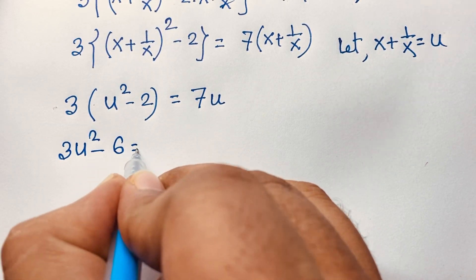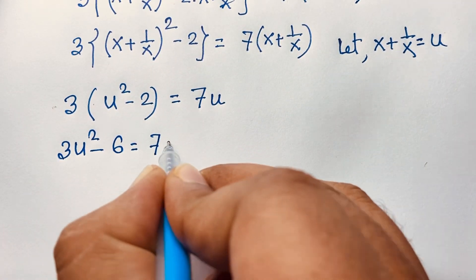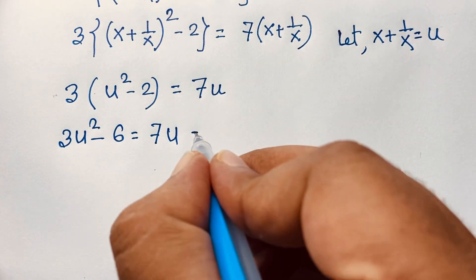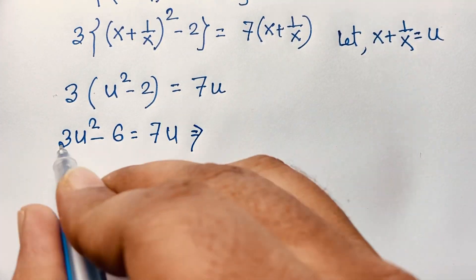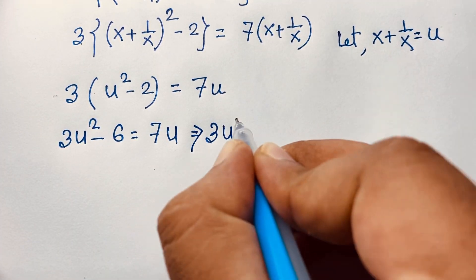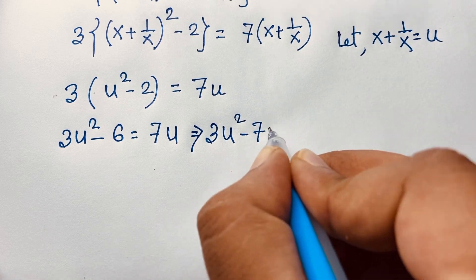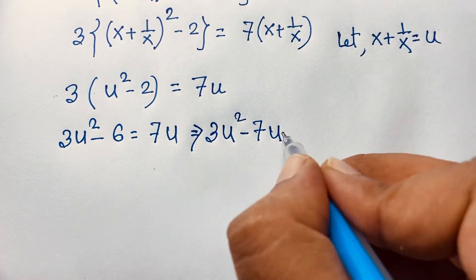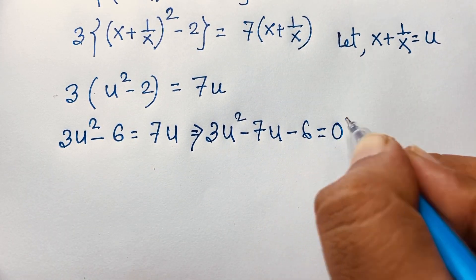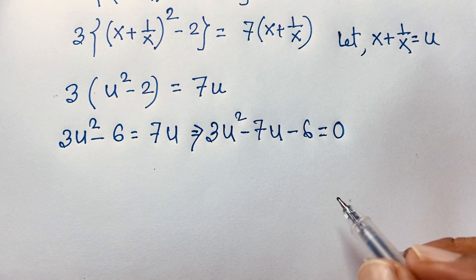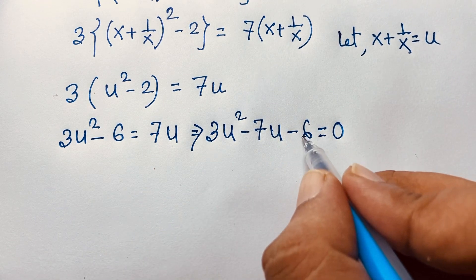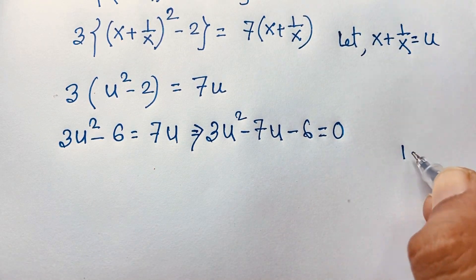Expanding: 3u squared minus 6 equals 7u. Rearranging, we get the quadratic equation 3u squared minus 7u minus 6 equals 0. We need to factor this — 3 times 6 equals 18.